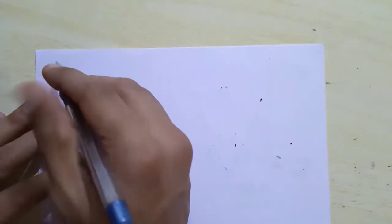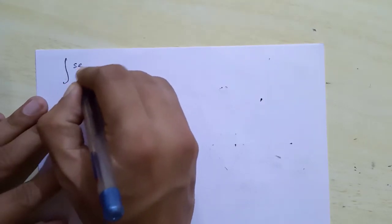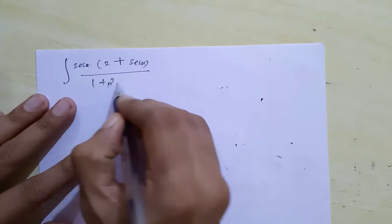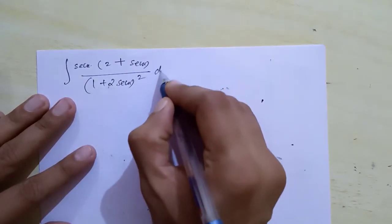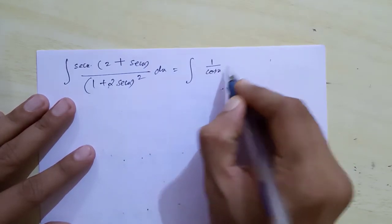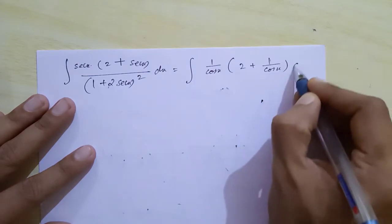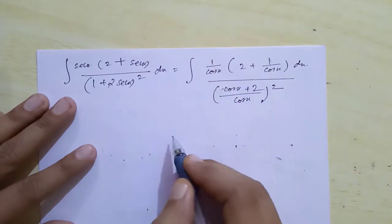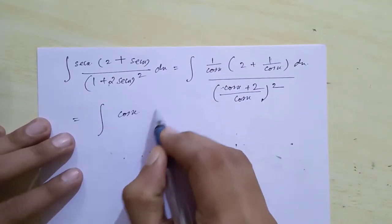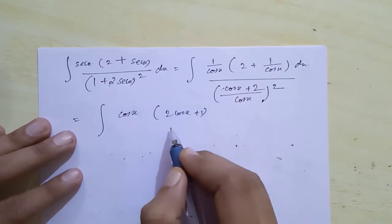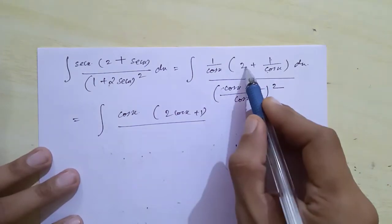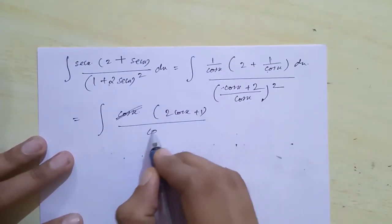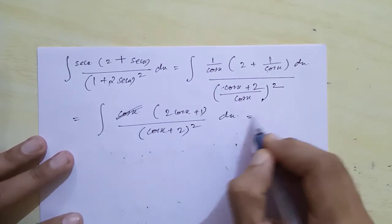Question 40: we are given integration of (2 + sec x) divided by (1 + 2 sec x)² dx. We will now convert using 1/cos x: (2 + 1/cos x) dx divided by (cos x + 2/cos x)², which is equal to integral of cos x into (2 cos x + 1) divided by (cos x + 2)² dx.